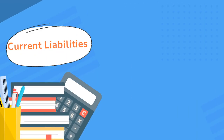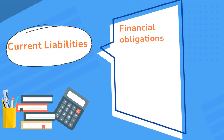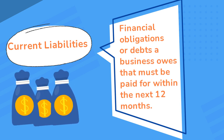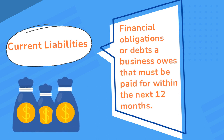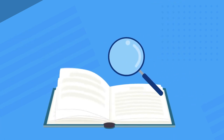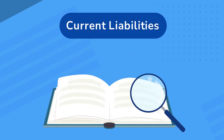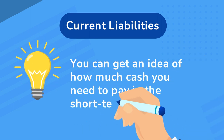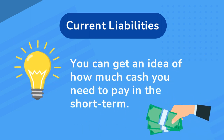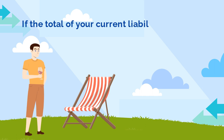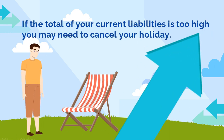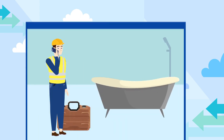Current liabilities are financial obligations or debts a business owes that must be paid within the next 12 months. By taking a look at the current liabilities section of your balance sheet, you can get an idea of how much cash you'll need to pay out in the short term. If the total of your current liabilities is too high, you may need to cancel your holiday plans and keep working to earn more money to cover your upcoming bills.